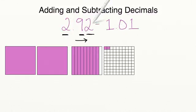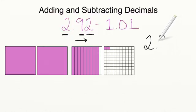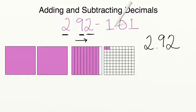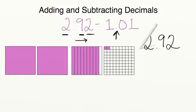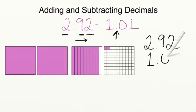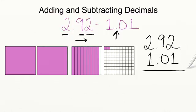To subtract these two numbers, I'm first going to rearrange the problem. We have 2 and 92 hundredths and I'm going to set 1 and 1 hundredth right beneath it, making sure I line up our decimal points. As long as I line up the decimal points, that will make sure I also line up the ones place, the tenths, the hundredths, and all of the other place values.